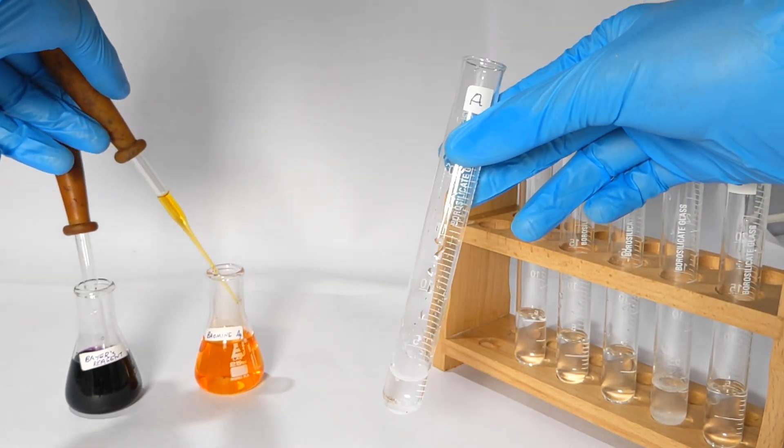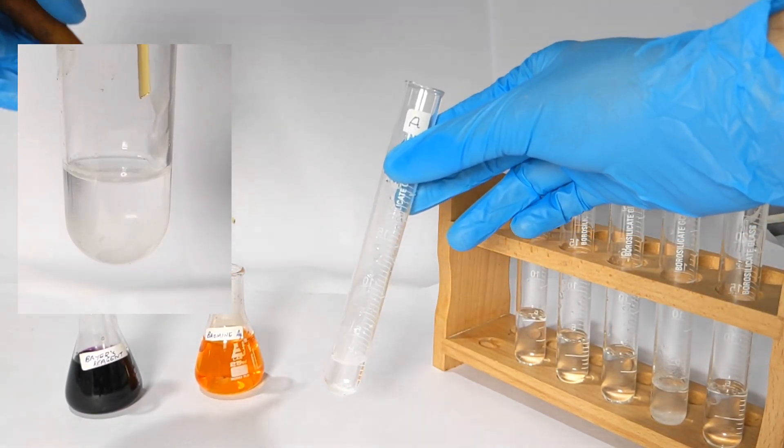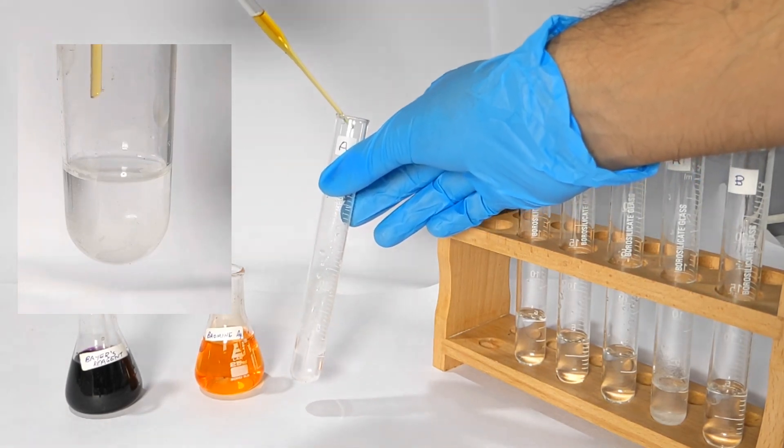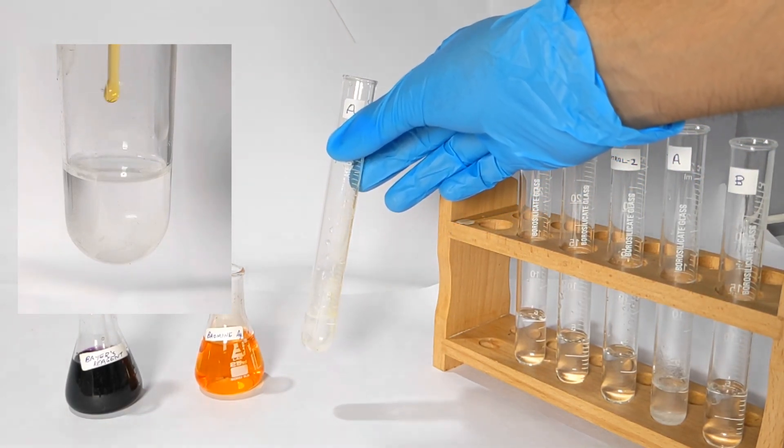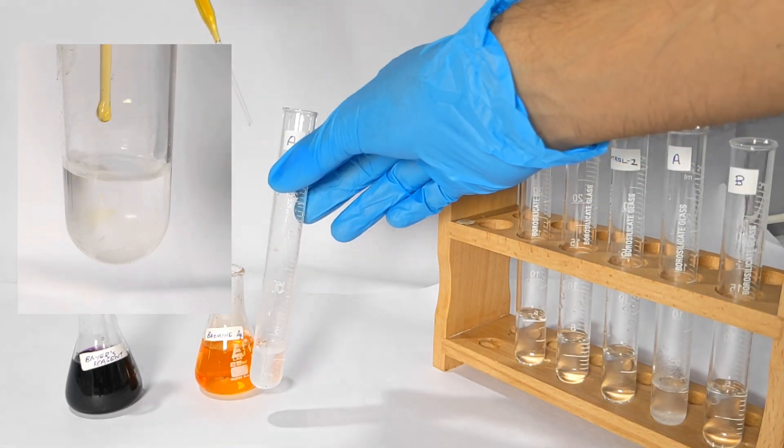You can clearly see that when aqueous bromine or bromine water is added to the test tube A, color of the bromine is discharged and the solution remains colorless. A small video clip shown as an insert on the left side of the screen shows the decolorization.